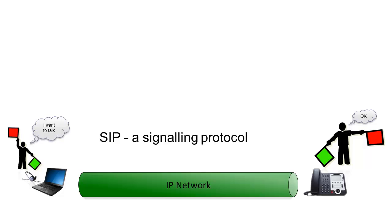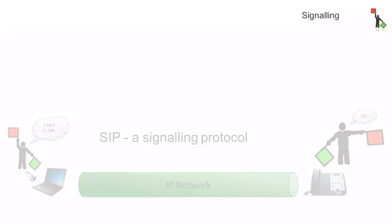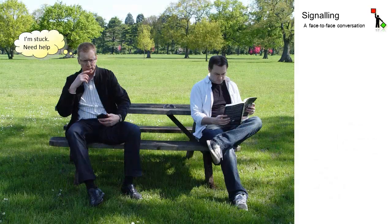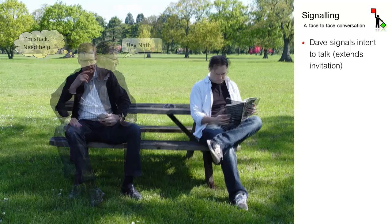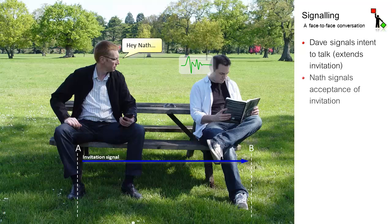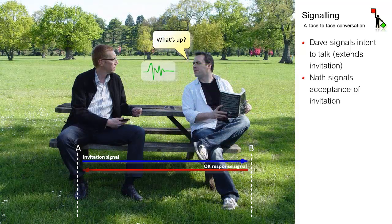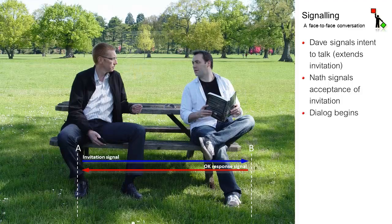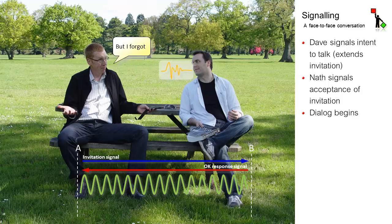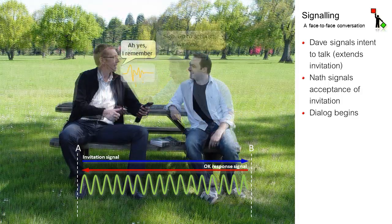Virtually all communications begin with signaling, even a face-to-face conversation. Dave wants to talk to Nath, so he signals his intent by calling over — a sound wave carried through the air. Recognizing the invitation to talk, Nath signals back to accept. With Dave's invitation signal answered with Nathan's acceptance signal, both parties are ready to converse. They begin a dialogue, an exchange of media — in this case, more sound waves traveling through the air.